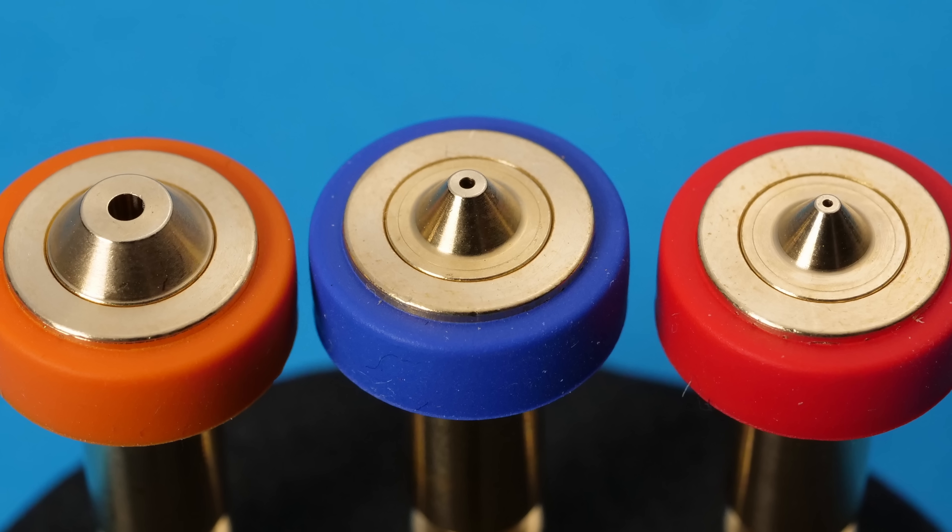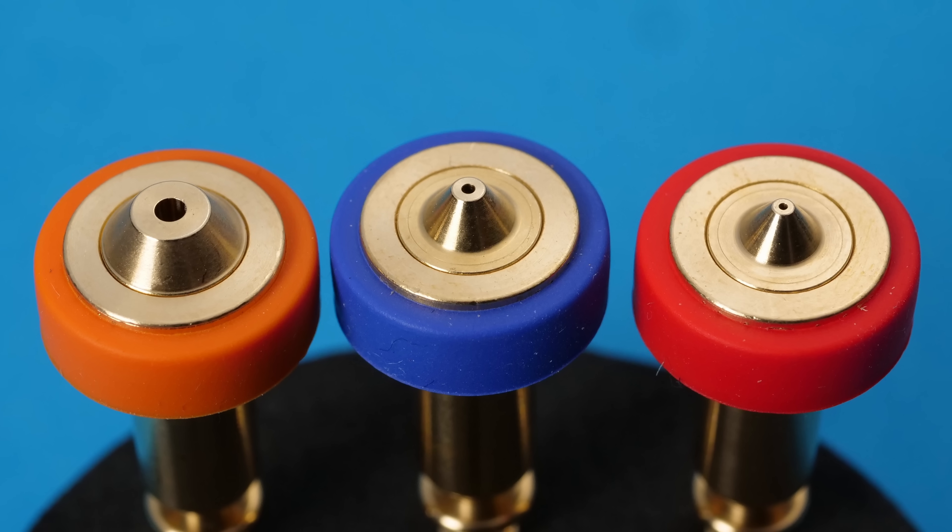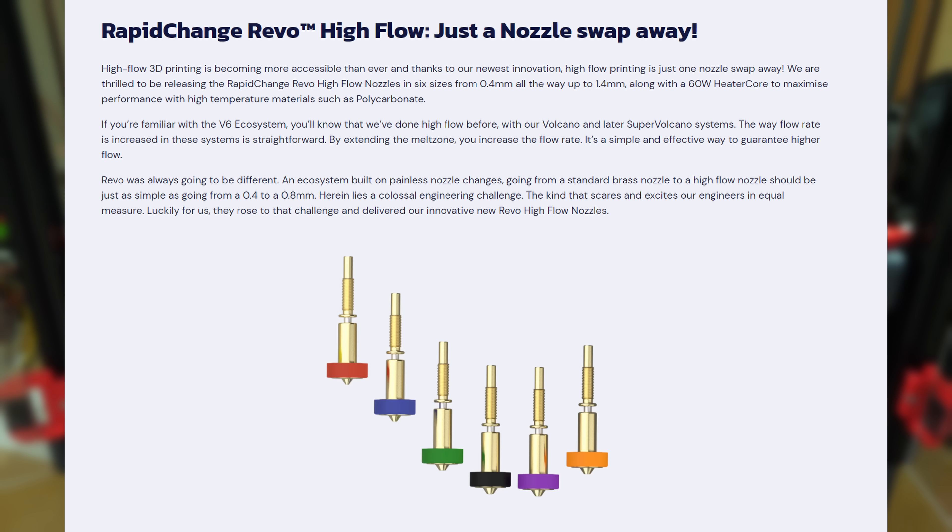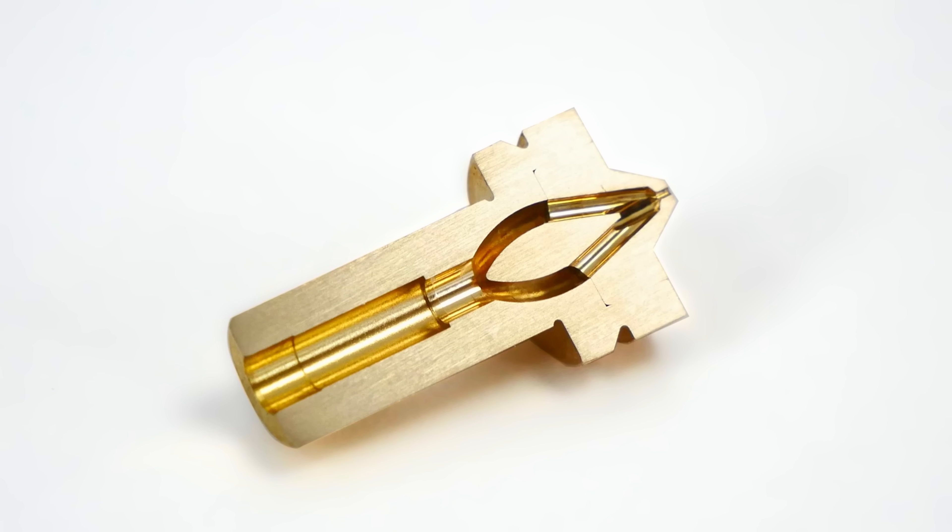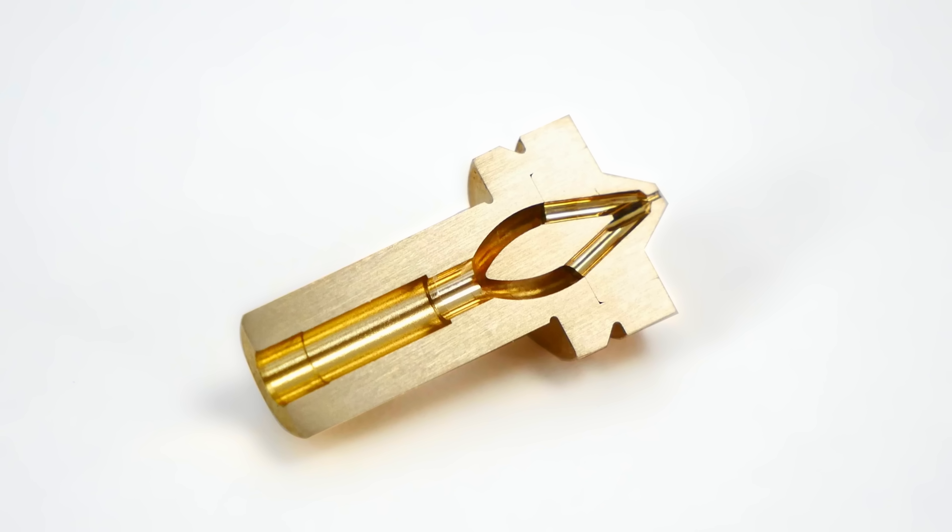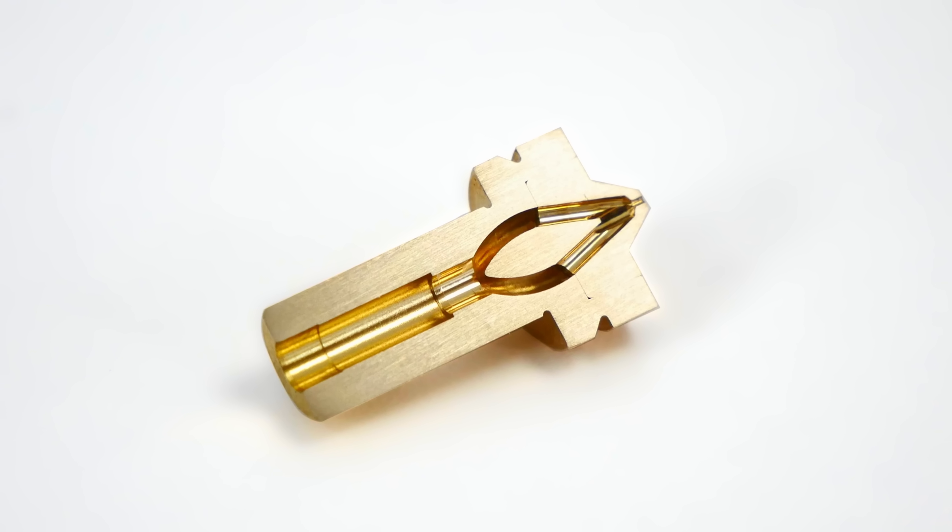Today E3D are releasing their brand new high flow nozzle for their Revo ecosystem called Revo High Flow. It utilizes a different but similar technology to Bontech's CHT design where the flow path is divided to achieve higher flow rates and faster printing speed.